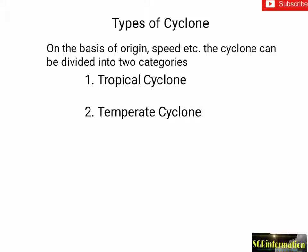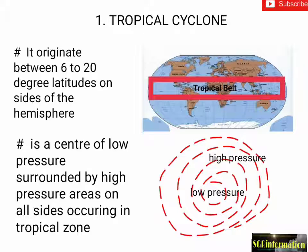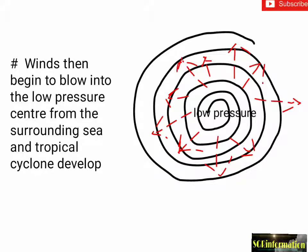Types of cyclone: on the basis of origin, speed, etc., cyclones can be divided into two categories — number one, tropical cyclone, and number two, temperate cyclone. Tropical cyclones originate between 6 to 20 degrees latitudes on both sides of the hemisphere. They have a center of low pressure surrounded by high pressure areas on all sides, occurring in the tropical zone. Winds blow into the low-pressure center from the surrounding sea, and tropical cyclones develop.